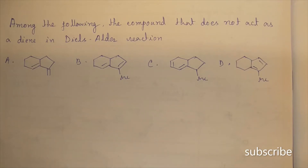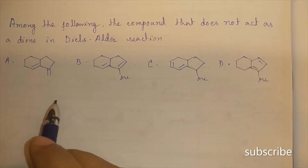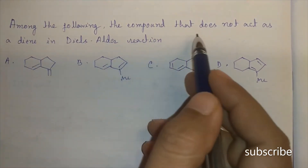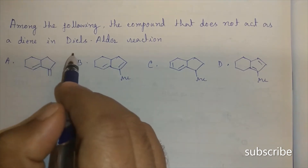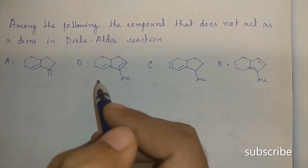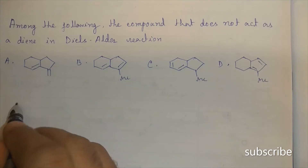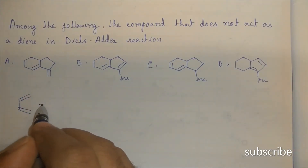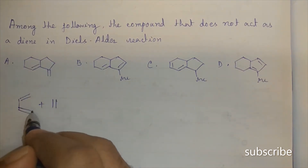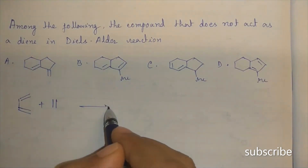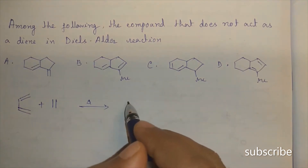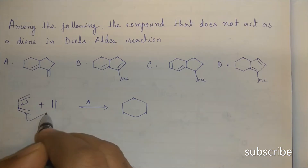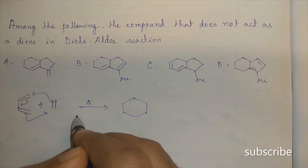Hi guys, we are discussing a GATE 2015 question paper problem. The question was: among the following, which compound does not act as a diene in a Diels-Alder reaction? In a Diels-Alder reaction, a diene reacts with a dienophile to form a cyclic product under heating conditions.